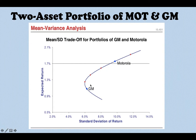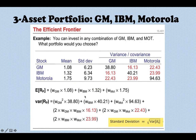If you add a little bit of Motorola to your portfolio, you move to this point on the curve, which gives you higher return with reduced risk. This means you should never hold GM alone — you should always hold some GM and Motorola together in order to increase your return and reduce your risk.